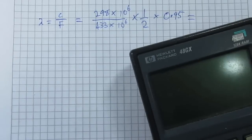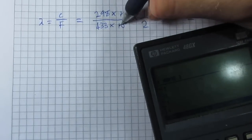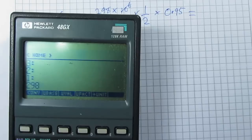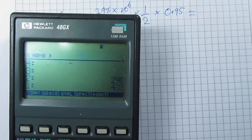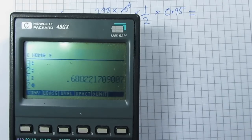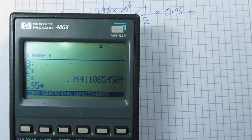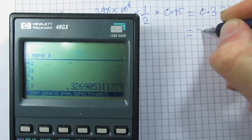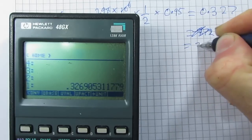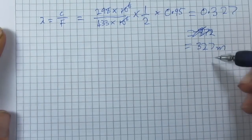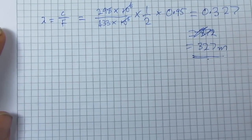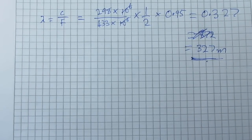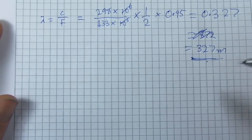If we do the maths for that, we can cancel out those two there. So all we need to do is 298 divided by 433 and multiply by 0.95. So we get 0.327, which equals 327 millimeters. Now, that figure there may or may not be correct, because there's many other factors which I haven't accounted for, like the material that you're making the antenna out of. There's all sorts of things that can affect it.